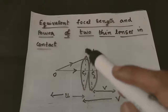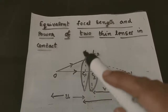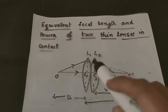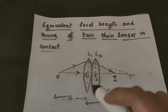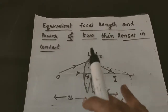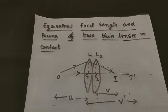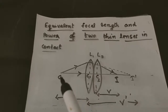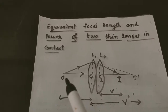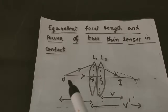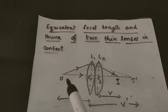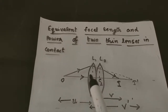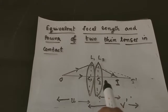In the figure you can see two lenses — one is L1 and the other is L2 — and they are placed very close to each other, that is they are in contact. You can also see a point object O which is placed on the principal axis of this lens system.